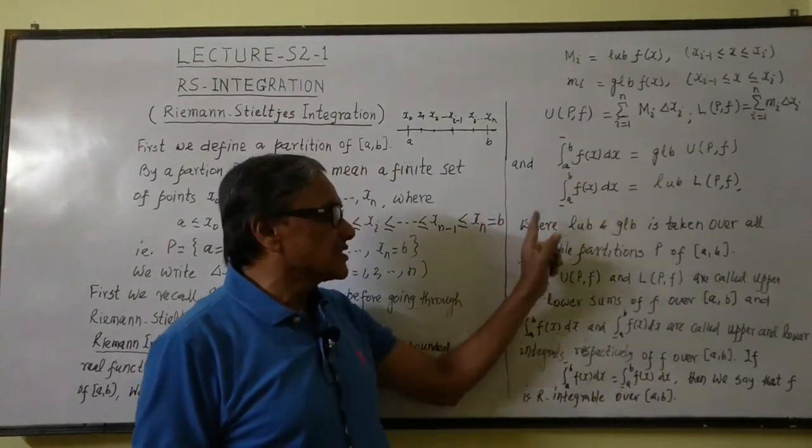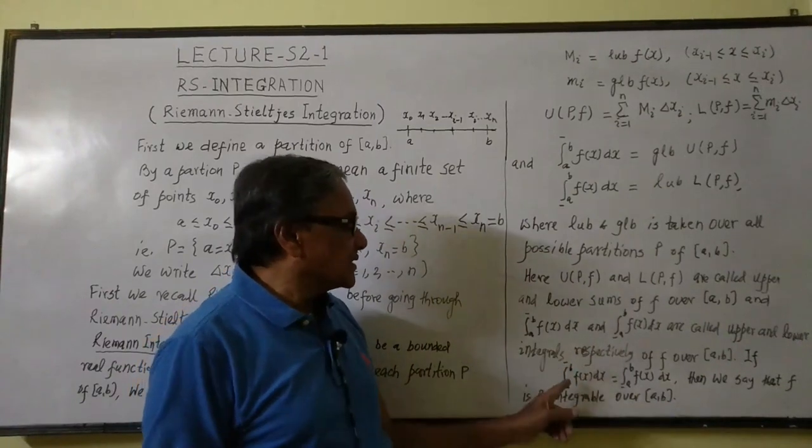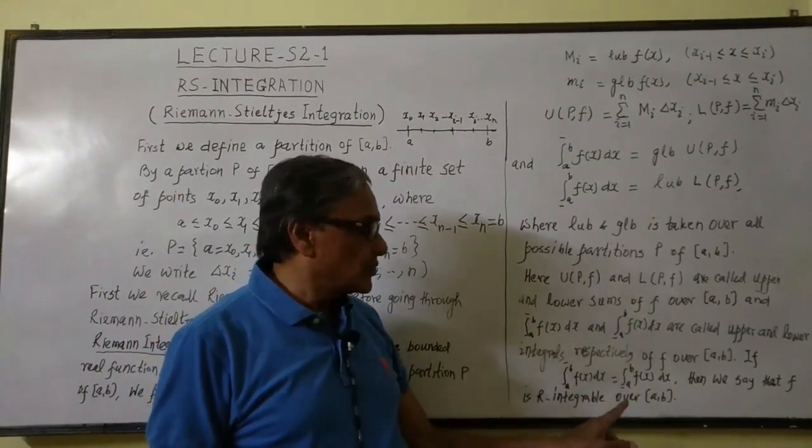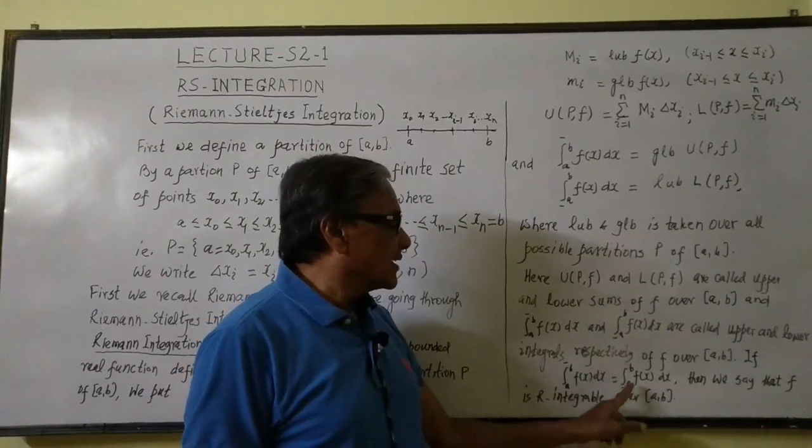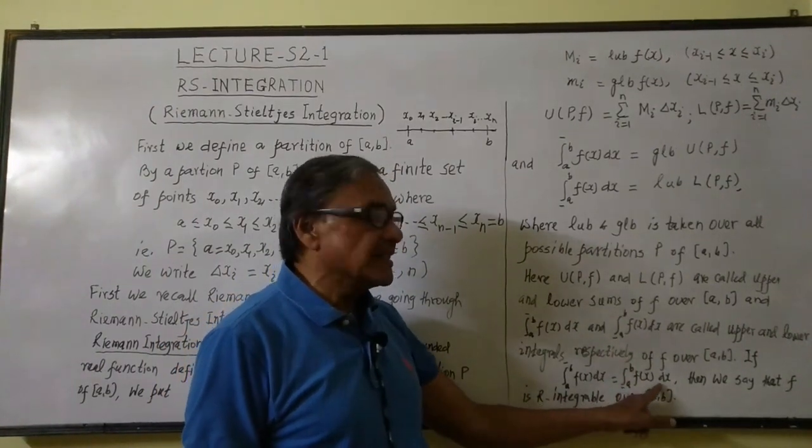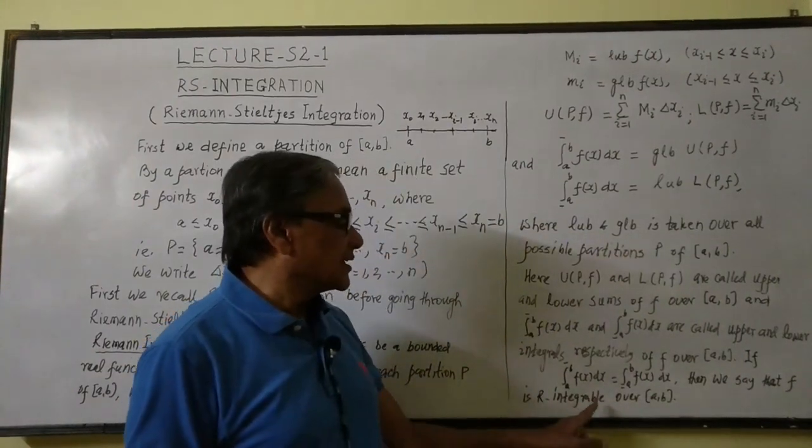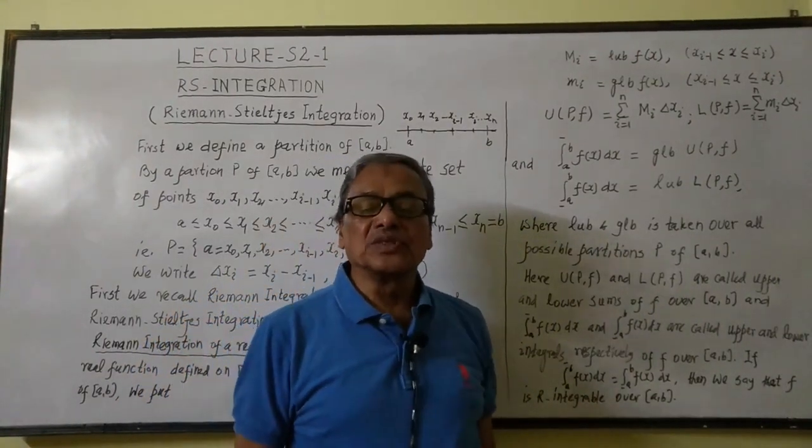Now when these three integrals are equal—that is, upper integral a to b upper bar f(x) dx is equal to lower integral a to b lower bar f(x) dx—then we say that the function f is Riemann integrable over interval [a,b].